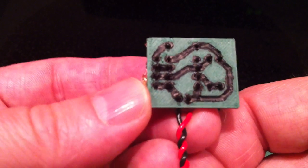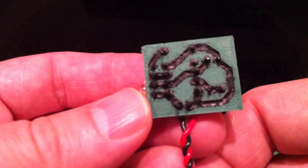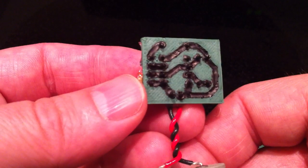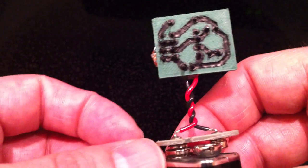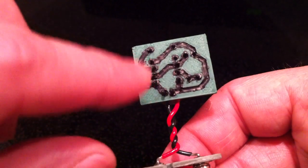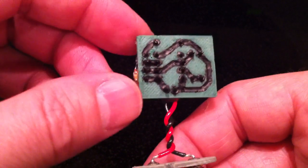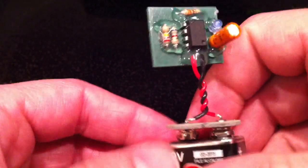I used a toothpick to dab the conductive paint into the tracks on the 3D printed PCB and made sure that all of the leads of all the components were covered and that none of the tracks were shorted out.